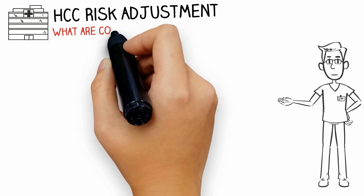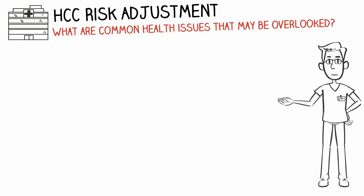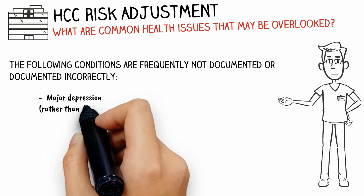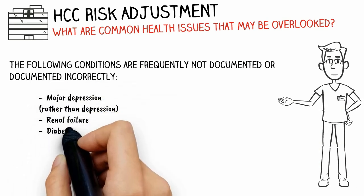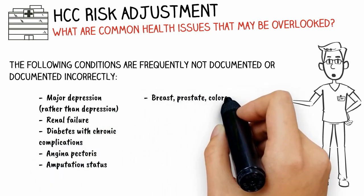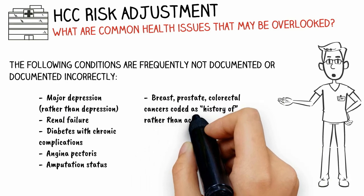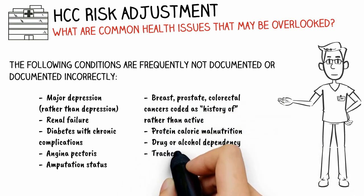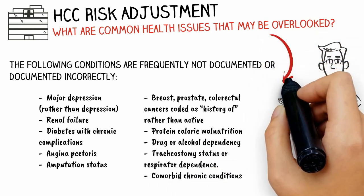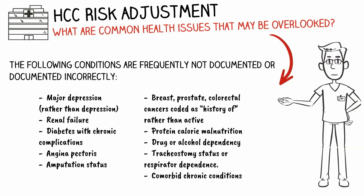There are many situations in which conditions are not documented or documented incorrectly. For instance, if applicable, coding major depression rather than depression, coding renal failure, diabetes with chronic complications. Also, breast, prostate, and colorectal cancers are frequently coded as history of rather than active. Protein calorie malnutrition is often overlooked, as is drug or alcohol dependency. There are many comorbid chronic conditions that need to be maintained year to year in order to keep the HCCs consistent.